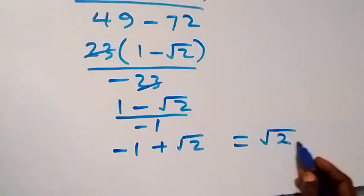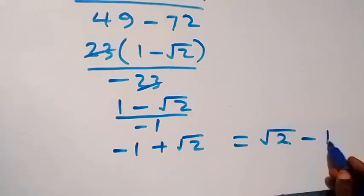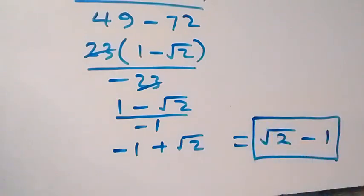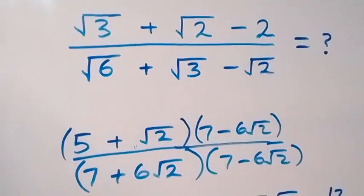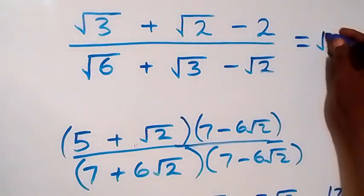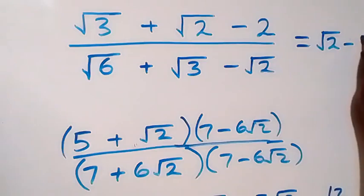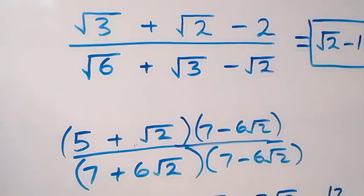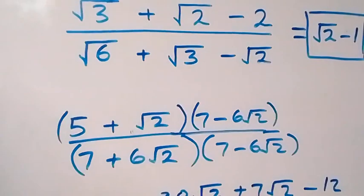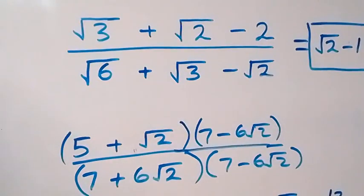This gives us (1 - √2) / (-1) = √2 - 1. So the answer to the given problem is √2 - 1. Thank you for watching — don't forget to subscribe for more videos, turn on the notification bell, share this video, give it a thumbs up, and see you next class!